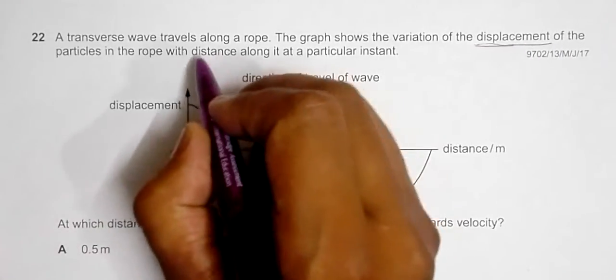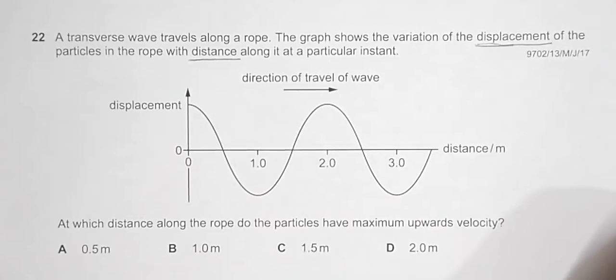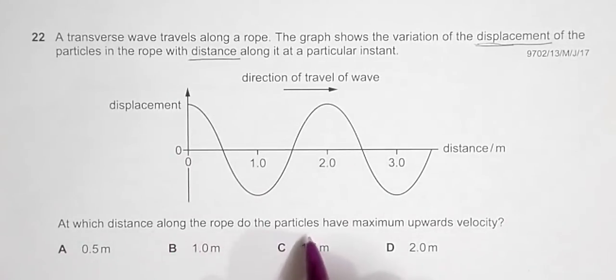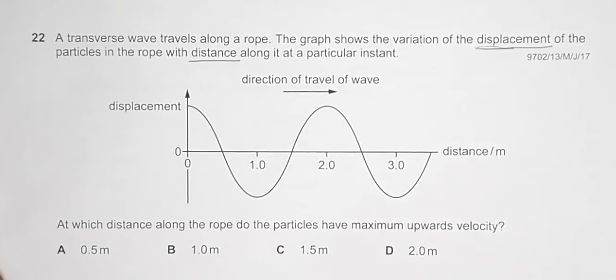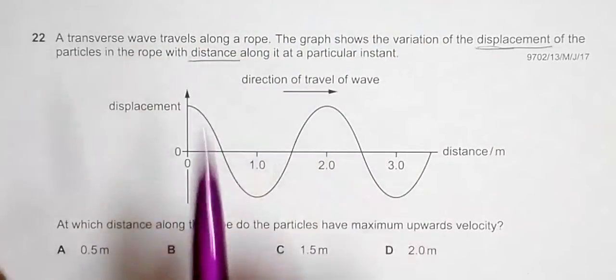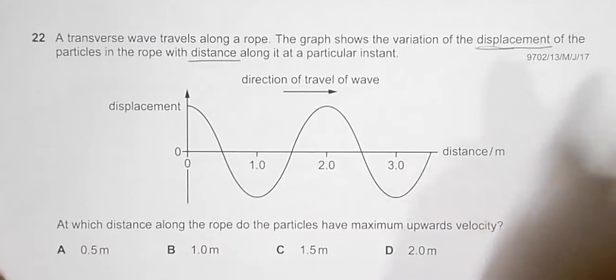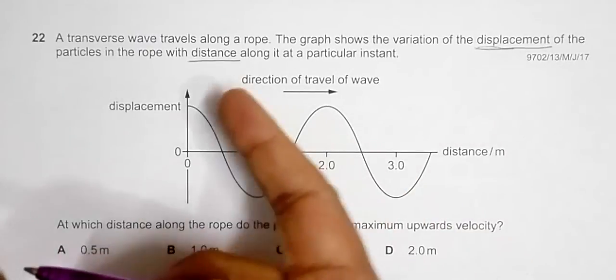At what distance along the rope do the particles have maximum upward velocity? So we have to find the distance at which the particles will have maximum upward velocity in this direction. Let us first be aware that if the wave is traveling like this, the position of the wave after a particular instant will be somewhat like this.